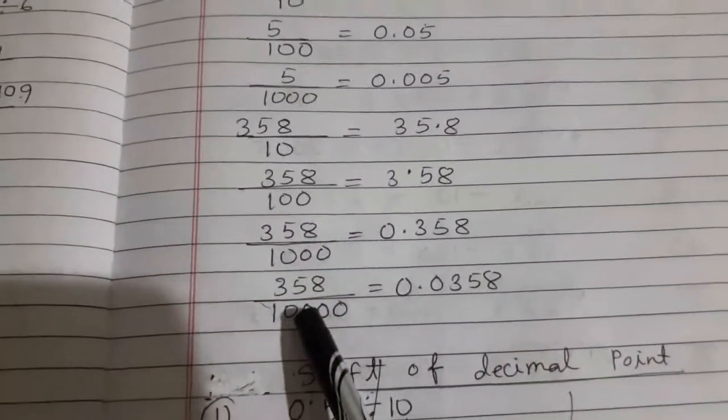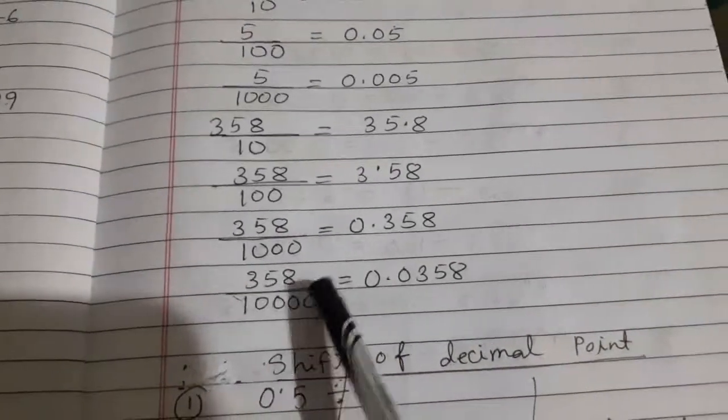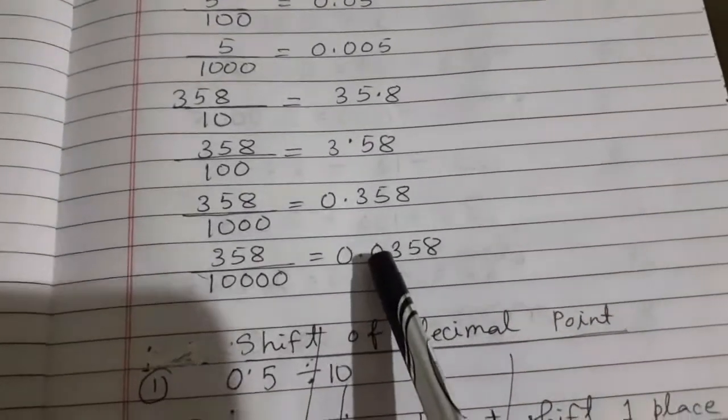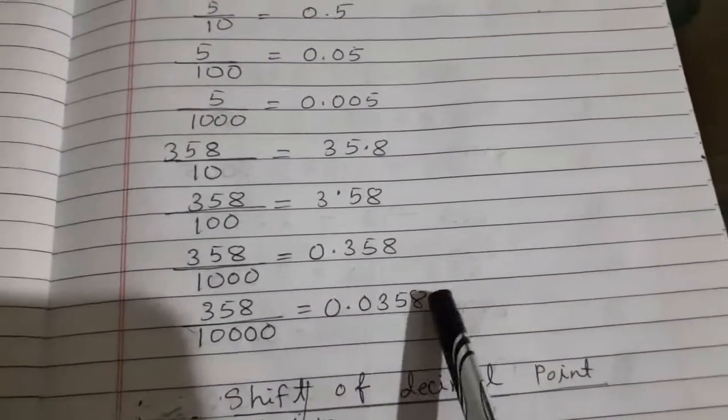But here also you see one, two, three, four zeros now. But here three digits only. Therefore we put the zero here: 3500.0358.